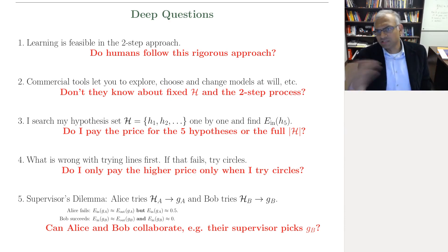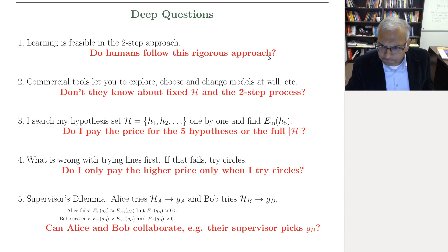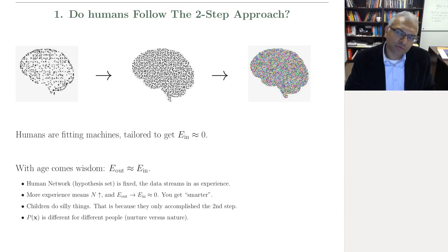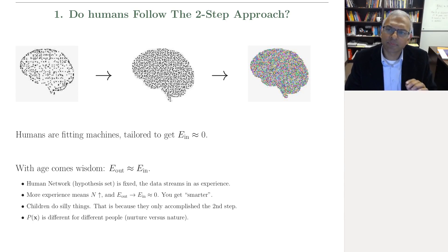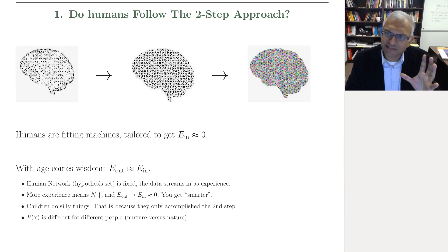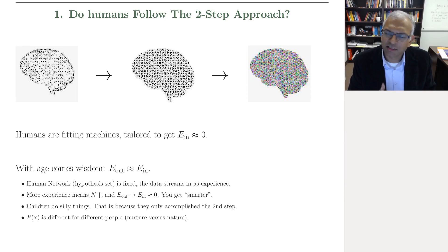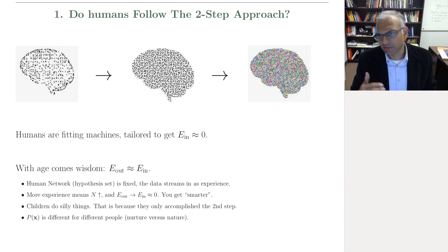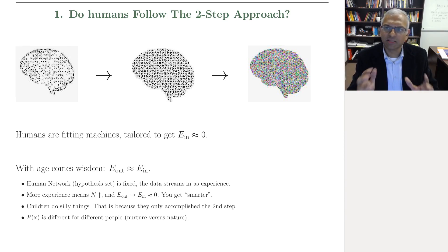Okay, so we'll answer these questions. Let's take them one by one. First question: do humans follow this two-step process? Indirectly, yes — but they don't explicitly implement E_in approximately equal to E_out. Humans are feeling machines.